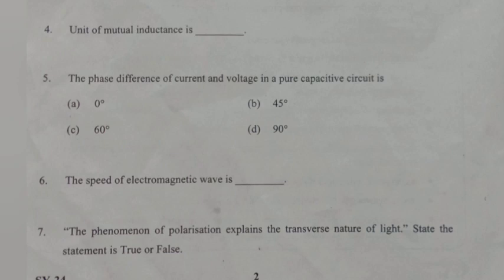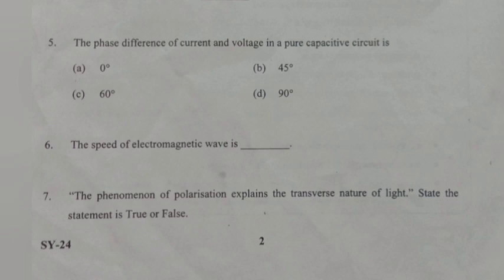Question 6. The speed of electromagnetic wave is dash. Answer: 3 into 10 raised to 8 meter per second.